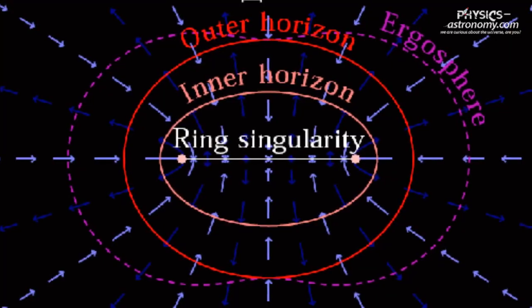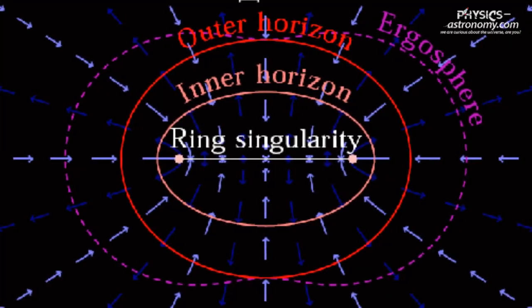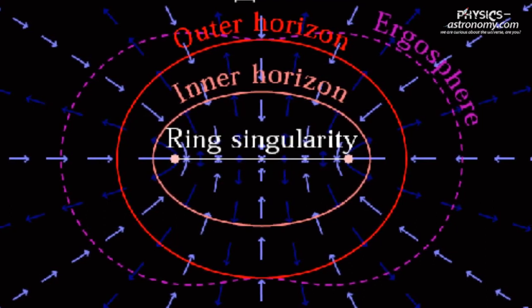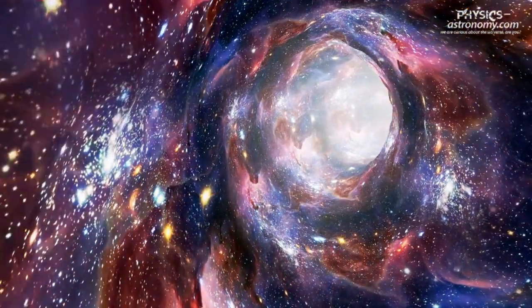One possibility is that the singularity at the center of a black hole is not a point, but a sphere or a torus. This would create a wormhole, a shortcut in space-time that connects two distant regions of the universe.